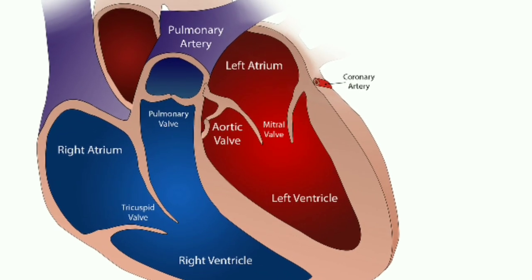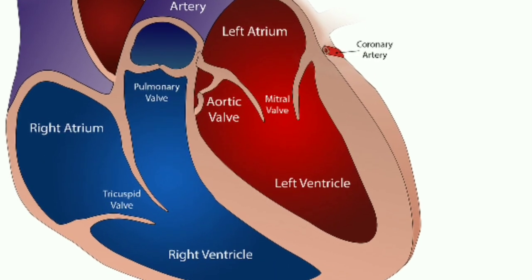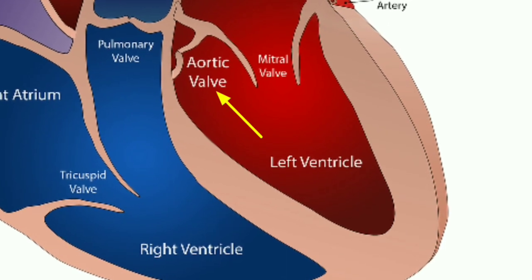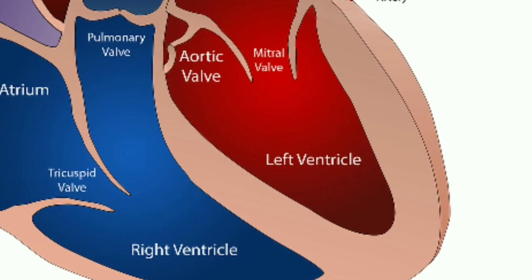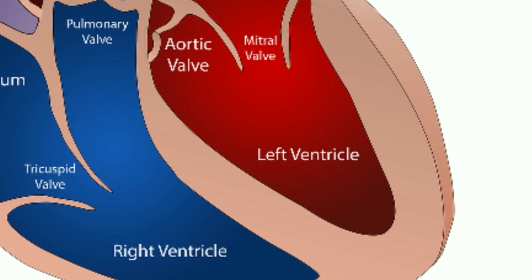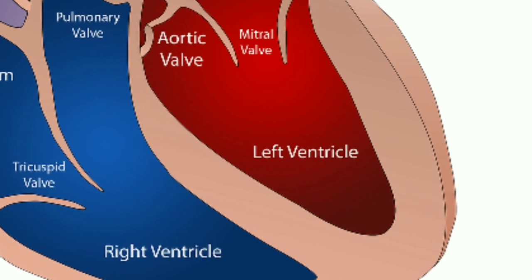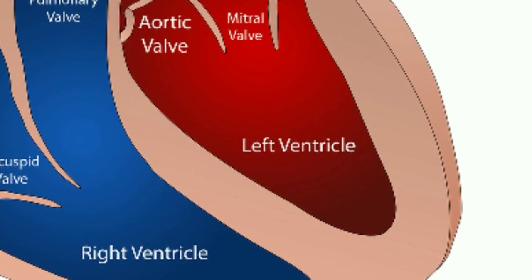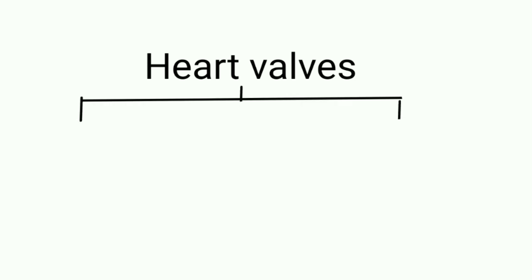Left ventricle: the left ventricle receives oxygenated blood from the left atrium and pumps it through the aortic orifice into the aorta. The left ventricle is the largest, strongest, and thickest chamber in the heart because it has to pump blood out to the entire body.